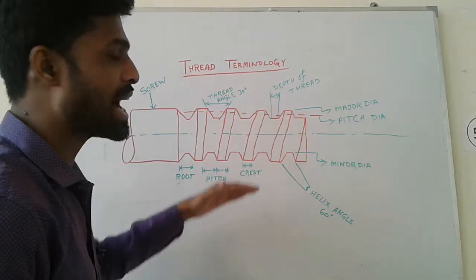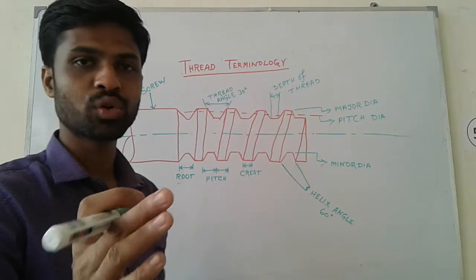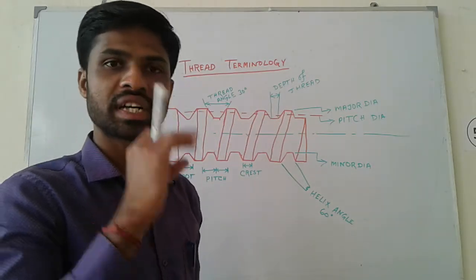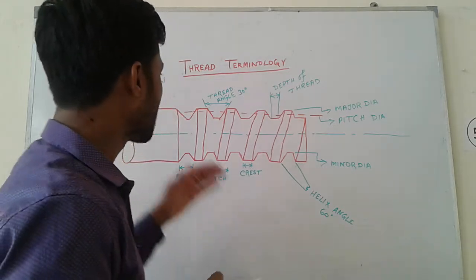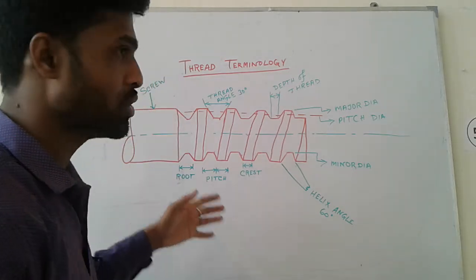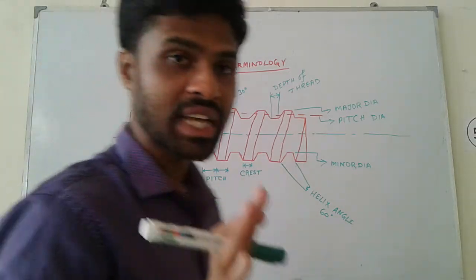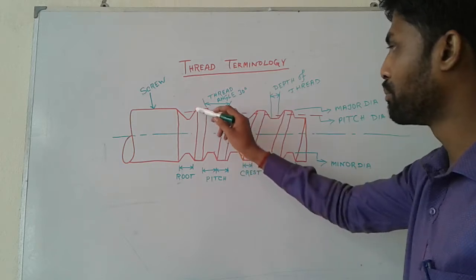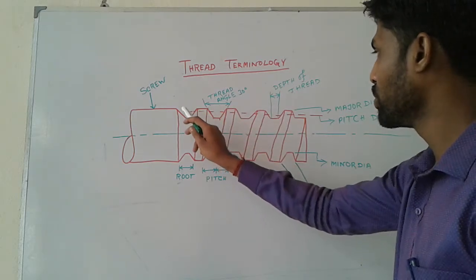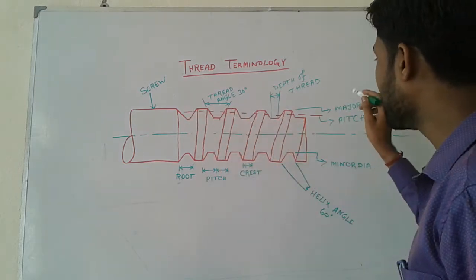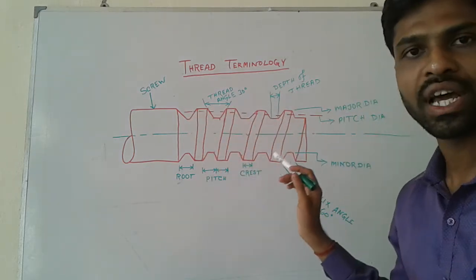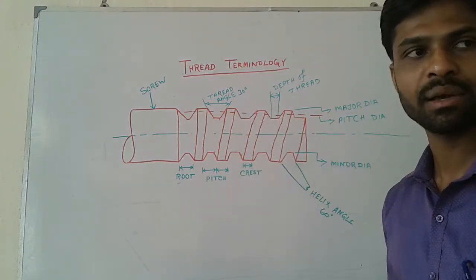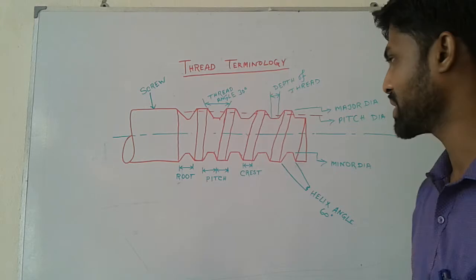There are many parts of a thread. There are different types of parts. First, there is the major diameter and the minor diameter.